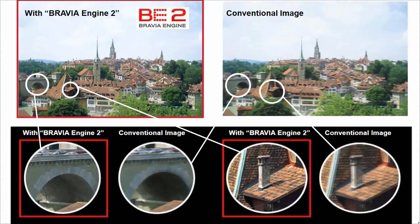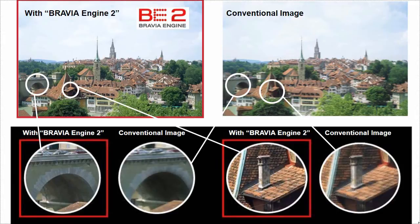In our Bravia Engine 2, which is on our entry-level sets, it provides a lot of image quality enhancements. Looking under the bridge in this image, you can notice when you're in the store looking at content — look for dark areas and whether you can see any detail there. On the roof tiles you can see a little blurring and noise, and with the Bravia Engine those tiles are enhanced and sharpened. You always want to look in darker areas to see the level of detail — are the blacks crushed into a black blob, or are you getting detail all the way down to your black level?